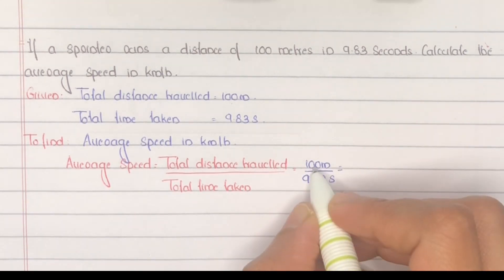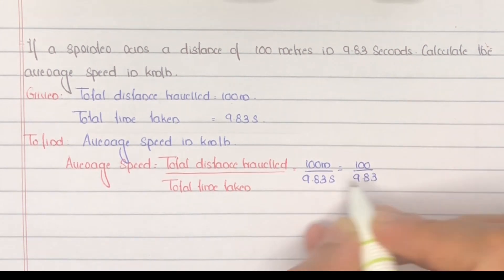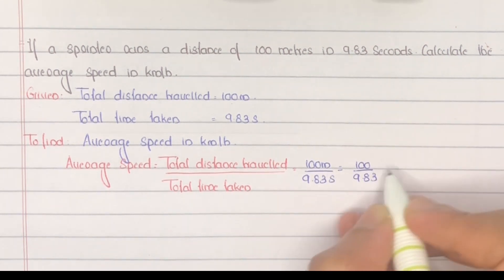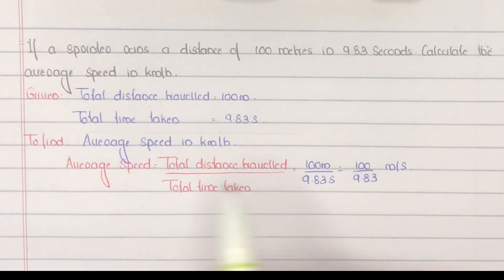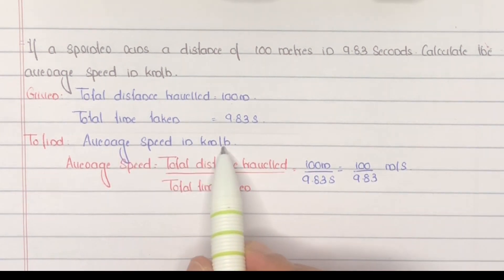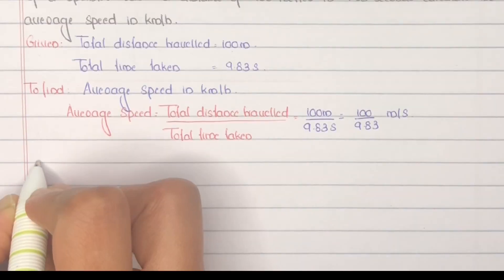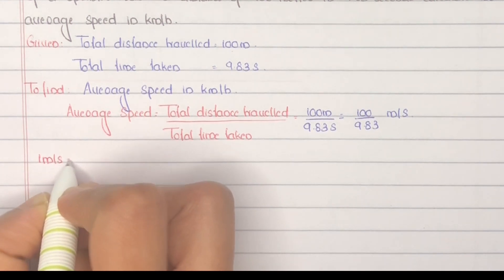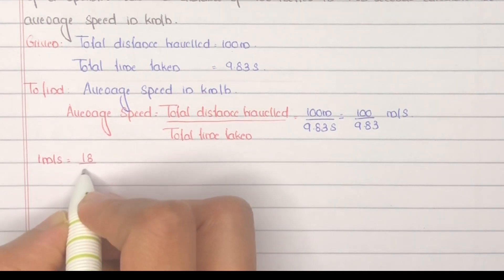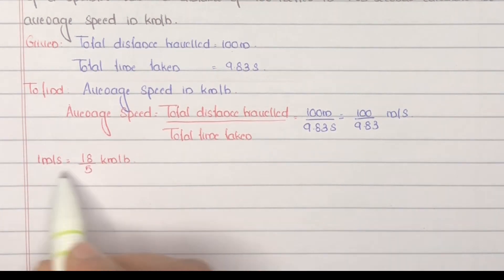This equals 100 by 9.83, with unit meter per second. Since the question asks for average speed in kilometers per hour, we next convert this meter per second to kilometers per hour. We know that one meter per second is equal to 18 by 5 kilometers per hour.